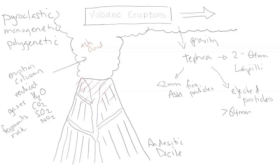The magma is very high in silica, therefore high in gas content and pressure, generally leading to more explosive and dangerous eruptions. Parts of the volcano's edifice and slopes can get broken off and ejected, propelled like a massive catapult through the air as part of the eruption.